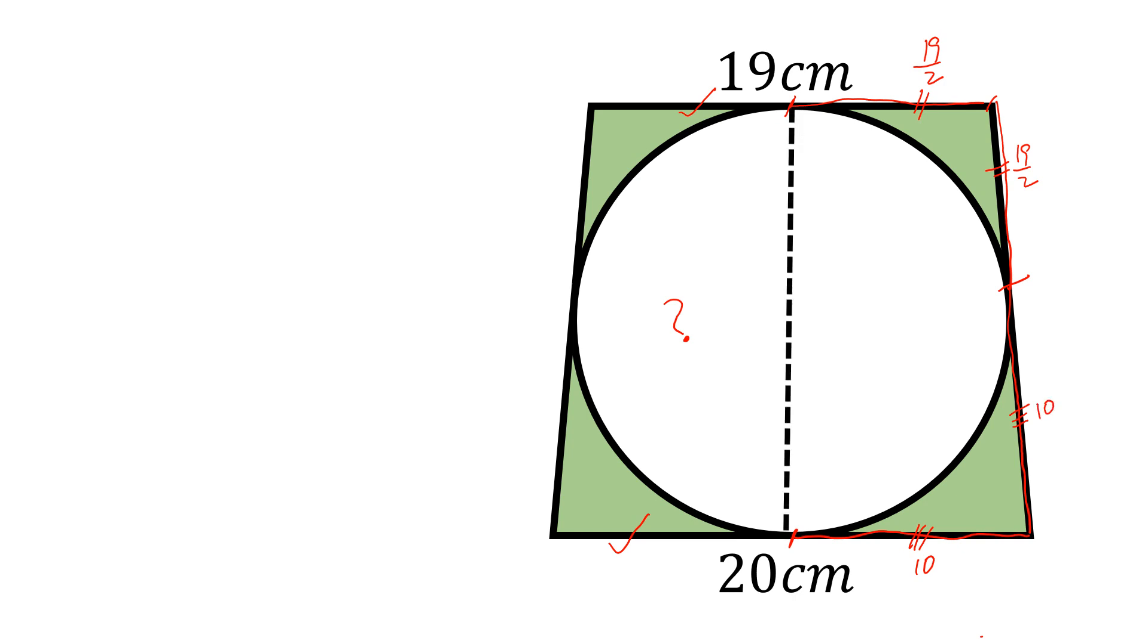And this is the diameter of this circle, so this is the same as the diameter of the circle, so this will be D. Now, let this is A, this is B and this is C.